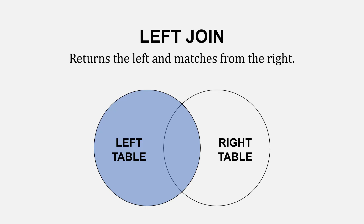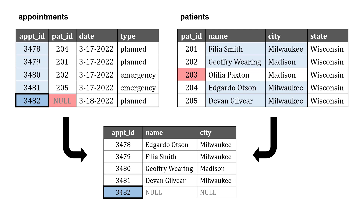With the left join, it's a little different — it returns the left table and matches from the right. So when the patient ID is null, we still include that record because we're pulling everything from the left table. However, we don't pull data for patient 203, since that's only in the right table. Notice that when we pull in appointment 3482, the name and city will be null because we don't have a matching patient ID in the patients table.